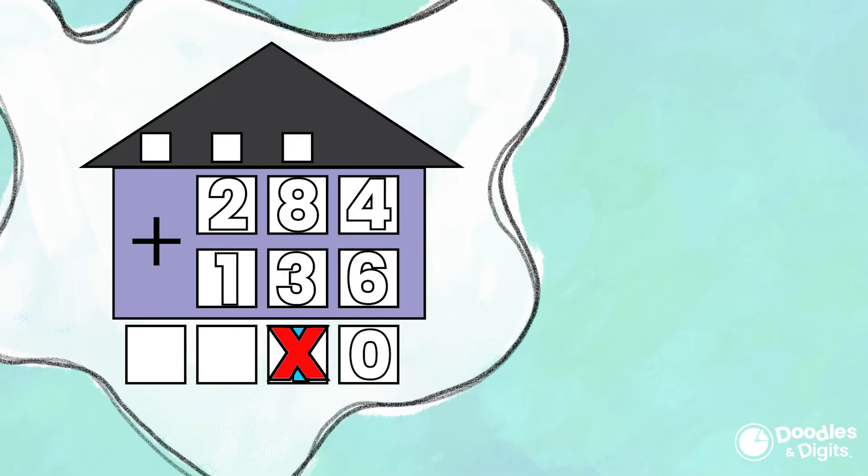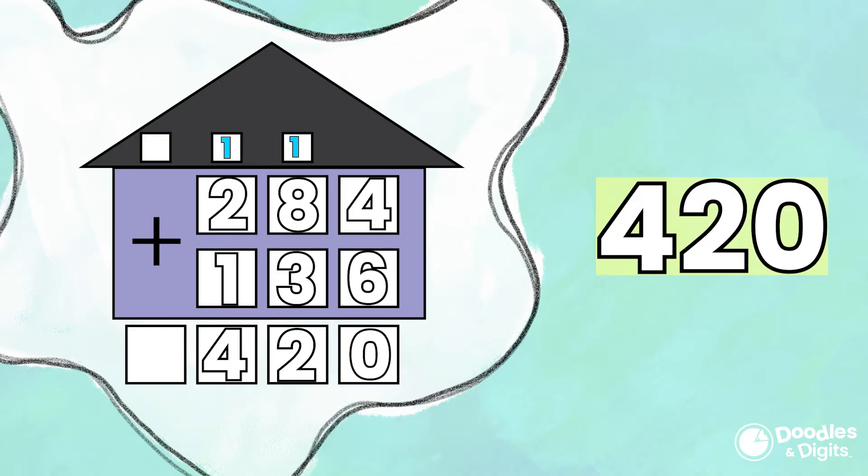The second reason is if you think about it, instead of having 10 ones, you also have one group of 10. So we're going to just put that 1 in the tens column and add that in. Now we'll do 8 plus 1 plus 3, which is 12, and we have to carry again. So again, we'll put the 2 in the tens place and regroup the 1 into the hundredths column. 2 plus 1 plus 1 is 4. So our answer is 420.